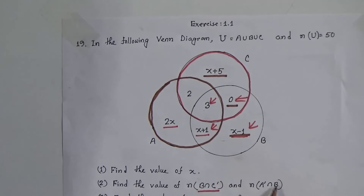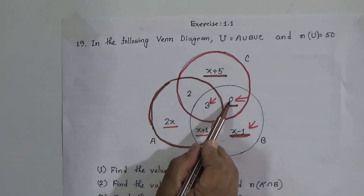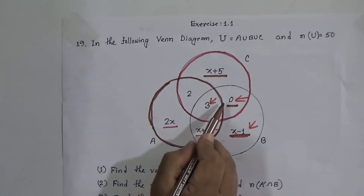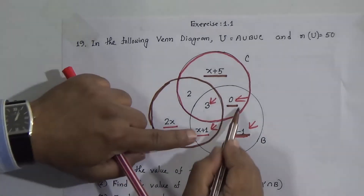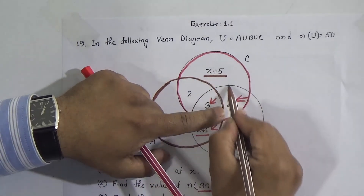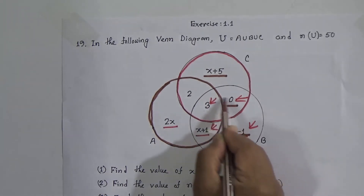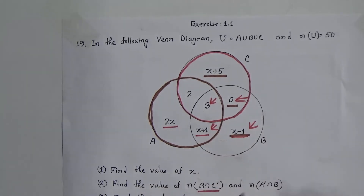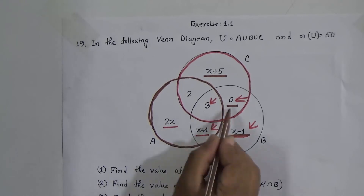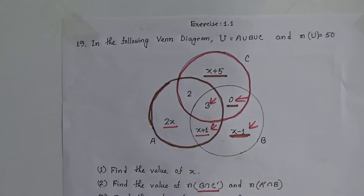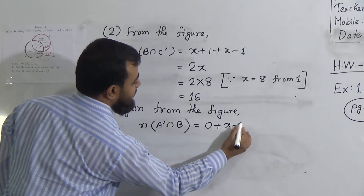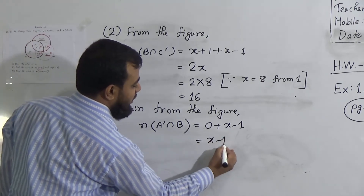When we intersect A prime — containing (x+5), 0, and (x−1) — with set B — containing 0, 3, (x+1), and (x−1) — the common elements are 0 and (x−1). So A'∩B contains only 0 and (x−1). From the figure: n(A'∩B) = 0 + (x−1).